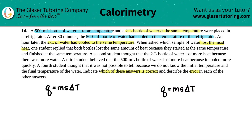If we just look at the lettering here: Q is the heat — either the heat gained or the heat lost, whether it's positive or negative. M stands for the mass of the object that we're either heating up or cooling down. S is the specific heat of the element or compound — a constant value depending on what the compound or element is. And delta T is the change in temperature, which always equals the initial temp minus the final temp: Ti minus Tf.